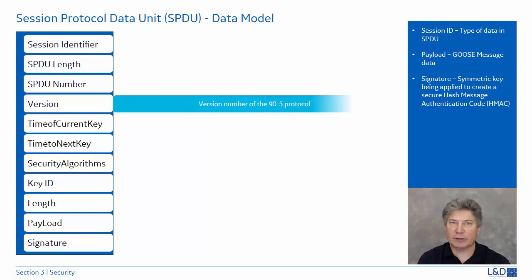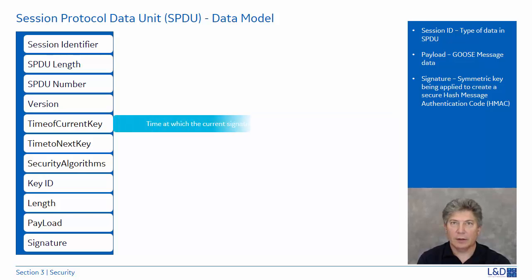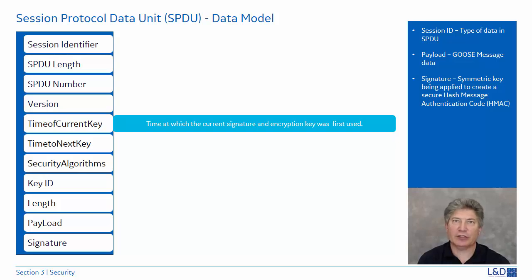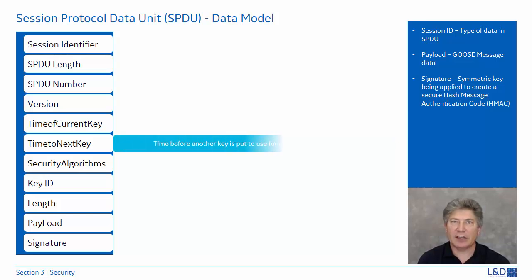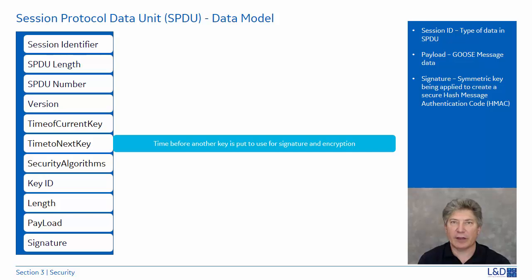The version field indicates the version of the 61850-90-5 protocol being used. The time of current key is a security attribute which represents the time at which the current signature and encryption key was first used. Time to next key is a security attribute that represents the time before another key is put into use for signature and encryption. It is recommended that the Key Distribution Center changes the symmetric keys at least every 48 hours. The value is specified in minutes.